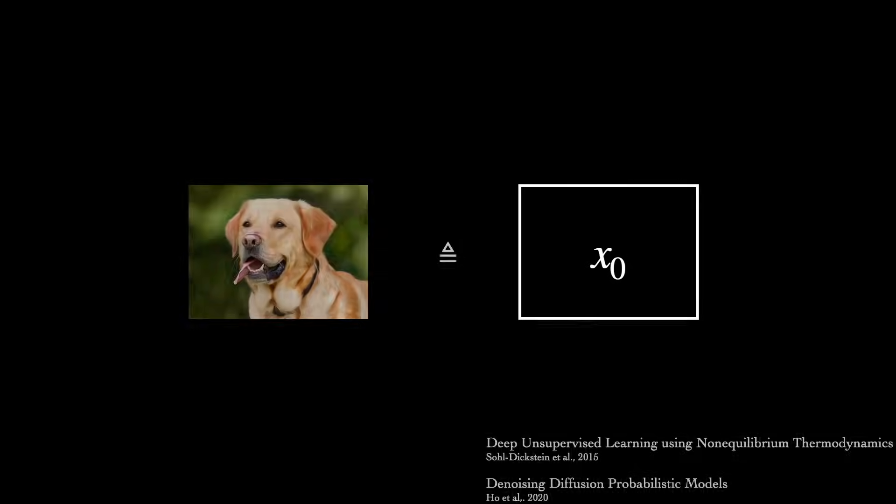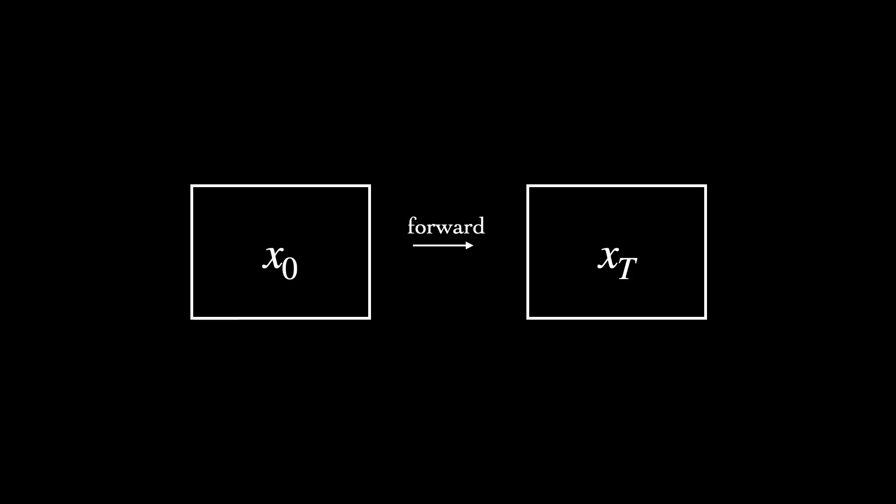Now, let's define a forward diffusion process that gradually adds noise to the image over big T time steps. Our model will be tasked with starting at x big T, and undoing this noise through what we'll call the reverse process.